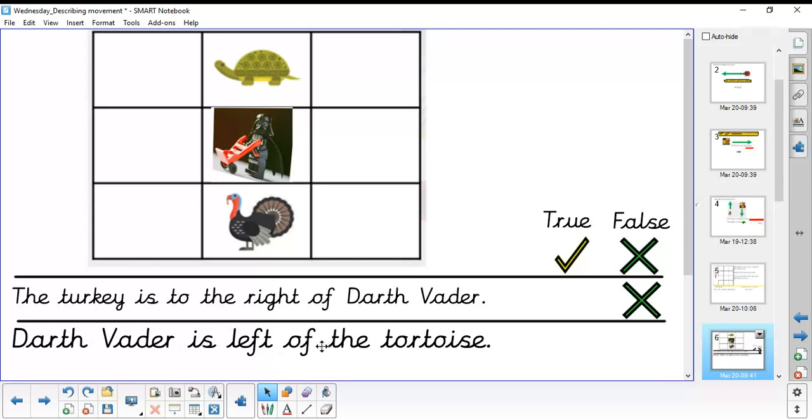Darth Vader is to the left of the tortoise. Okay, well, we have Mr. Tortoise here. And if we turned him to the left, yeah, he's now looking at Darth Vader. Quite scary. Let's keep going.